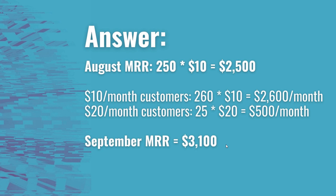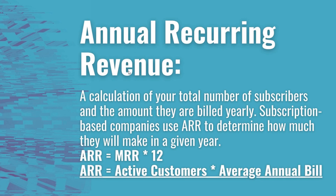This $3,100 is how much I expect to make per month. Once you calculate these numbers, you use them to project future months and the year. When someone says their ARR is over $100,000, they're likely taking their most recent month's MRR and multiplying by 12. Alternatively, you can use active customers times average annual bill if customers are billed on an annual basis.